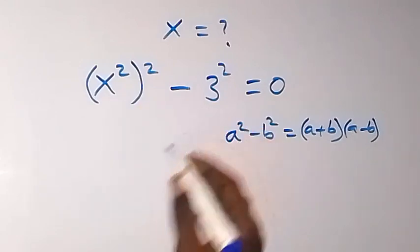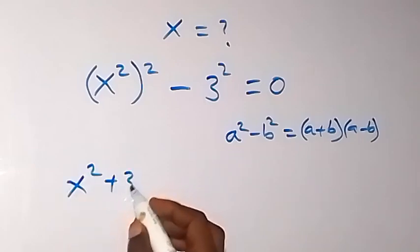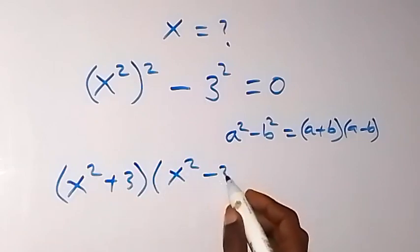So, a here is x squared, b here is 3. So we have x squared plus 3 now, multiplied by x squared minus 3, which is equal to 0.